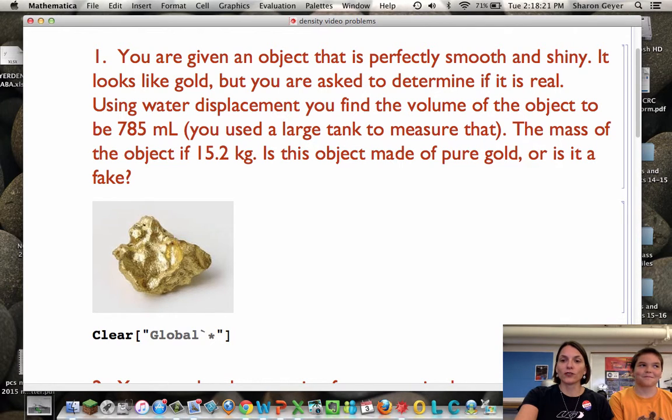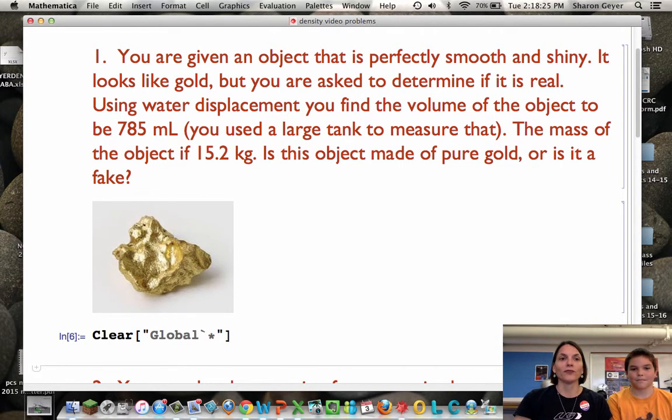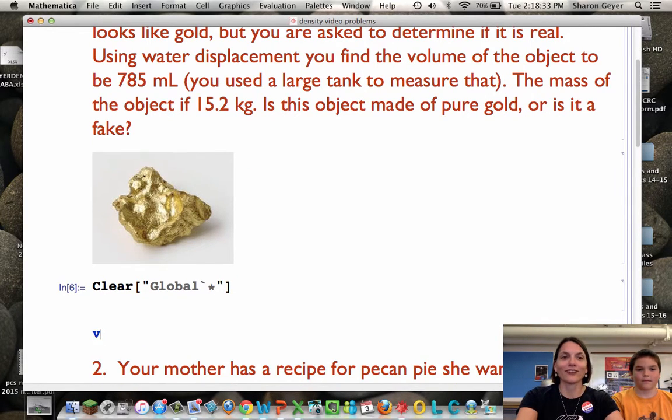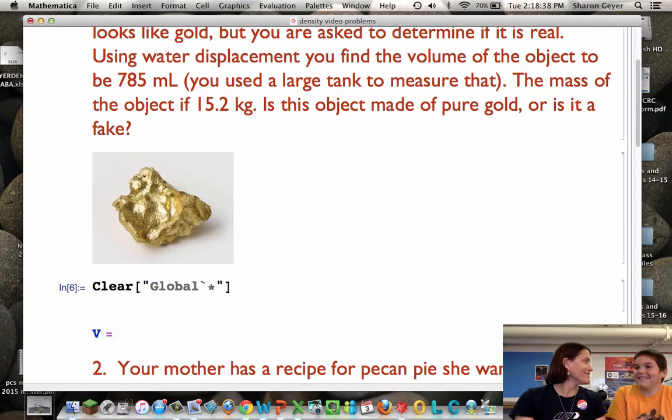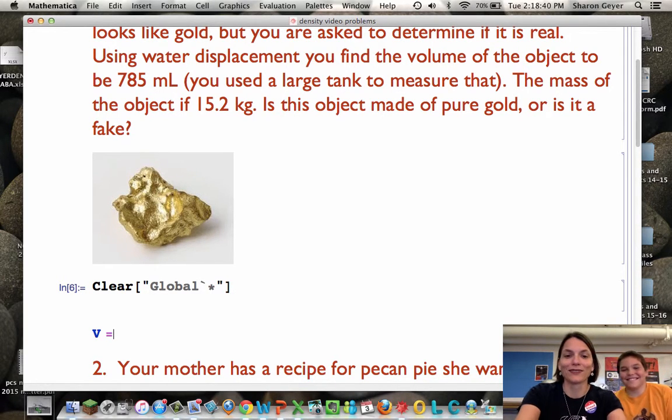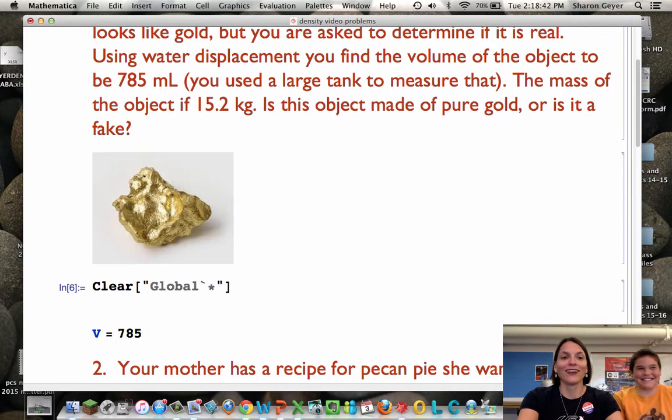First thing we're going to do is use this clear global statement to make sure that all of our variables are clear. And now we're going to assign the variables that we know. So what's the volume of our object? We're going to call that capital V. And the volume? 785 milliliters.